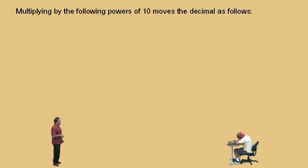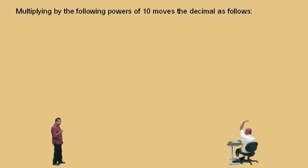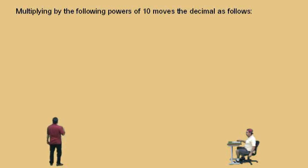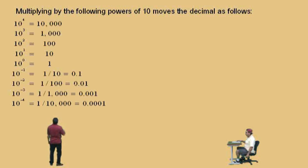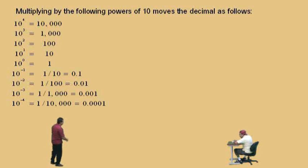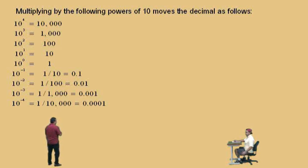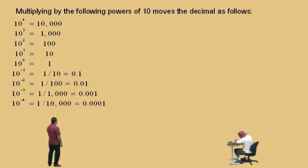Now, in the first part of this presentation, we learned that multiplying by powers of 10 moves the decimal. If it was a positive exponent, it moved to the right, and if it was a negative exponent, it moved to the left. Let's review: 10 to the 4th is 10,000; 10 cubed is 1,000; 10 squared is 100; 10 to the 1st is 10; 10 to the 0 power is 1 — anything to the 0 power is 1, except 0 to the 0, which is undefined. And 10 to the negative 1 is 1/10; 10 to the negative 2 is 1/100; 10 to the negative 3 is 1/1,000; and 10 to the negative 4 is 1/10,000.